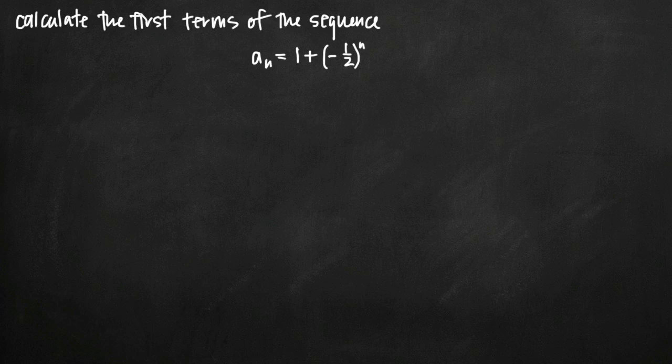Today we're going to be talking about how to calculate the first several terms of a sequence. In this particular problem we've been given the nth term of the sequence, which is a_n equals 1 plus the quantity (-1/2) to the n.